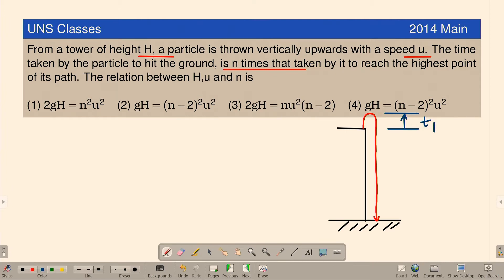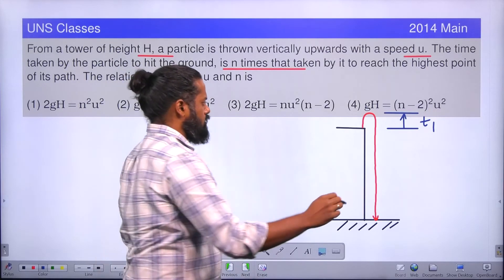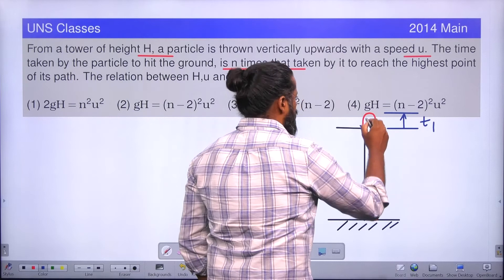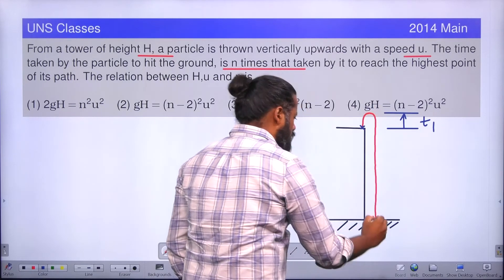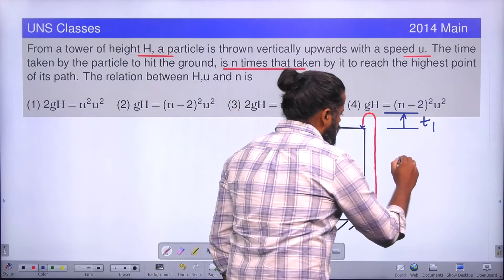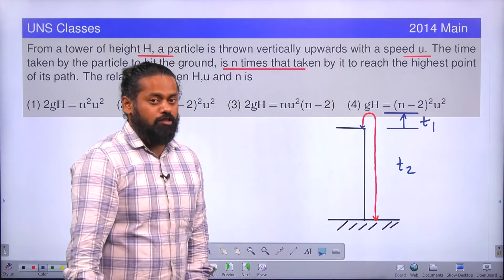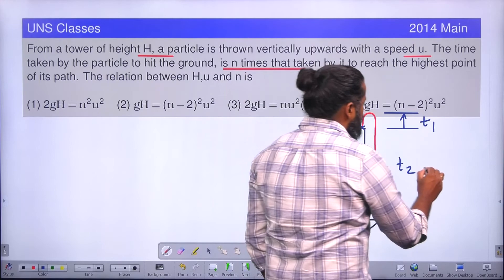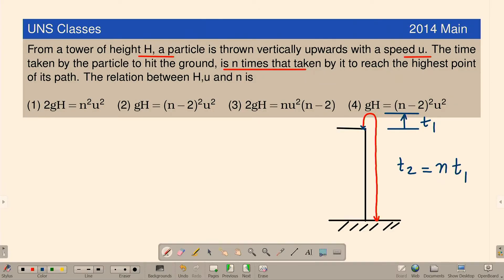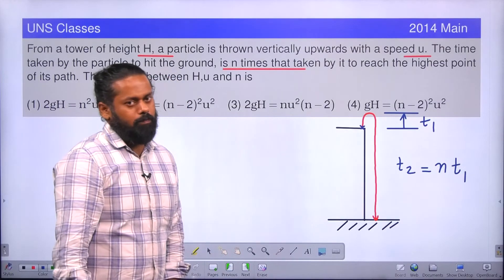And the time taken for the entire trip, that means from the starting point. See, up journey is T1 plus whatever time is taking, the total journey time is given as T2. And one more information is given: T2 is equal to N times T1. This is the information provided in the problem.